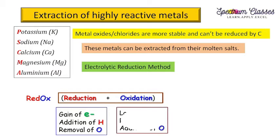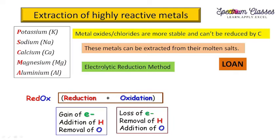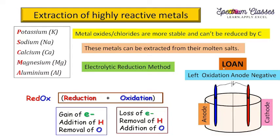In electrolytic reduction, redox reactions take place at two electrodes: the anode and the cathode. Here's a trick — LOAN: on the Left is the Anode, and on the right is the Cathode. At the anode, Oxidation takes place, meaning release of electrons occurs at this electrode. That is why this electrode is also known as the negative terminal, even though it is a positive electrode.